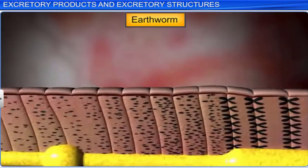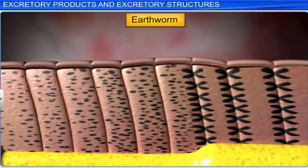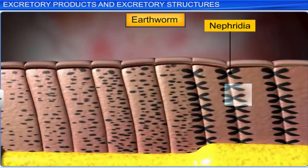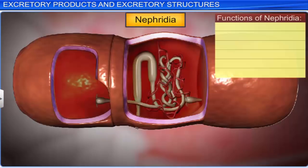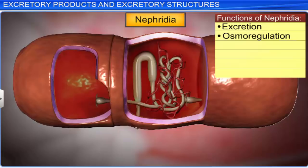Another excretory structure is the nephridia, found in many annelids like the earthworm. Nephridia are tubular structures that help remove nitrogenous waste and maintain the fluid and ionic balance.